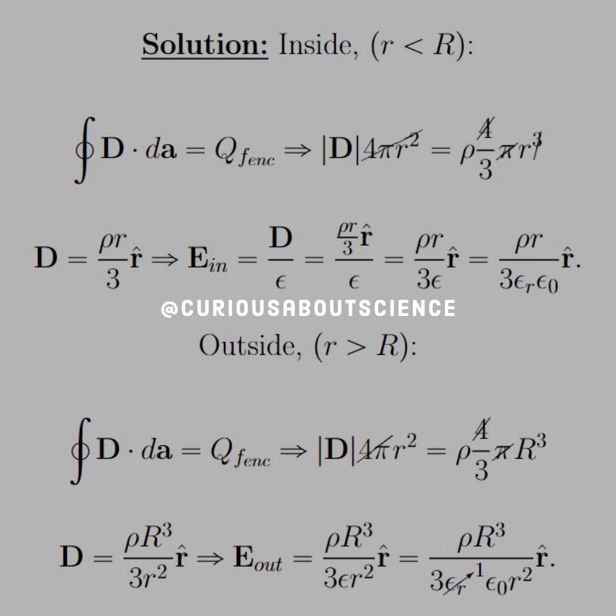Similarly, for outside, where little r is greater than capital R, we see that we have a Gaussian surface, which is, again, a sphere. And we have D times the surface area of a sphere, which is 4 pi r squared.